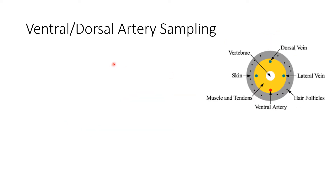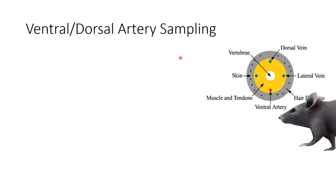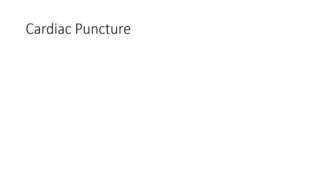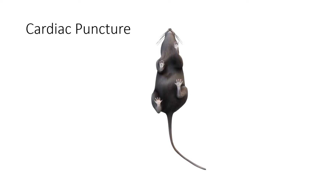The next method is ventral or dorsal artery sampling, where we collect blood from the tail of the animal by locating the ventral artery, inserting a capillary, and collecting the blood. The last method is cardiac puncture, which allows collection of a large amount of blood from a single animal. We locate the heart and puncture it with a syringe to collect blood. Cardiac puncture is a non-survival blood collection method.